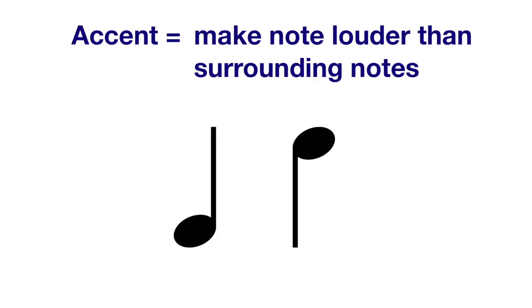An accent symbol means to make the note louder than the surrounding notes, and it's indicated by this little greater than sign that can appear above or below the note. So an example of an accent, if I were to play it every other note on a scale, would sound like this.